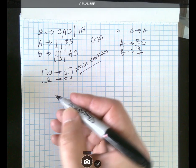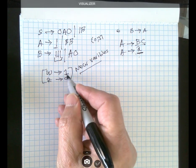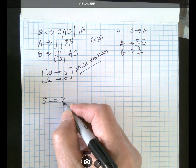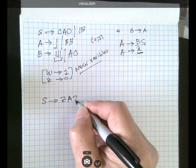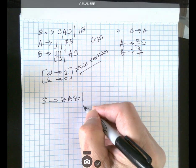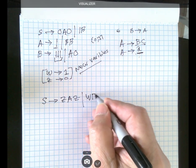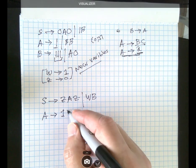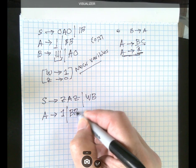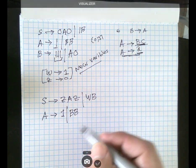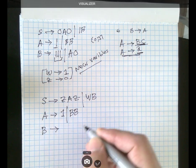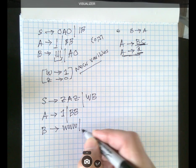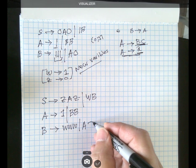Starting the conversion: S goes to Z, A, Z, A with 'one B' becoming W, B. For the second equation, A goes into 1 — I'll leave that because it's permissible — or BB, which is also acceptable. Then B goes into 1, 1, 1, which is not acceptable, so I'll change that to W, W, W. And A-zero becomes Z.